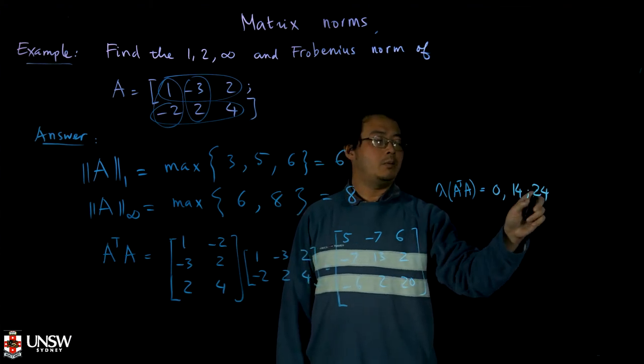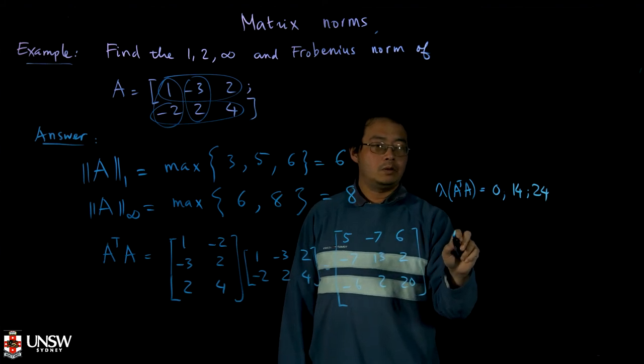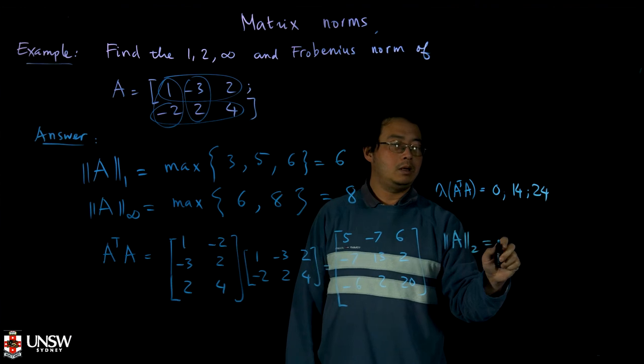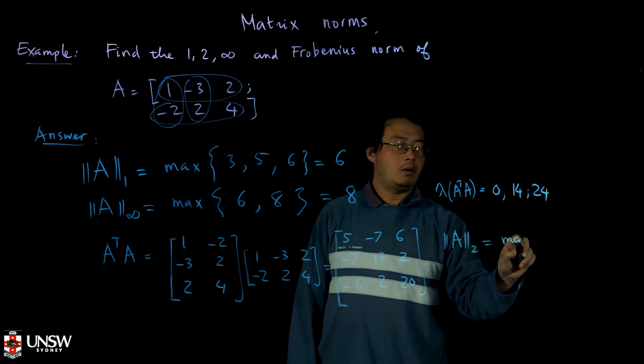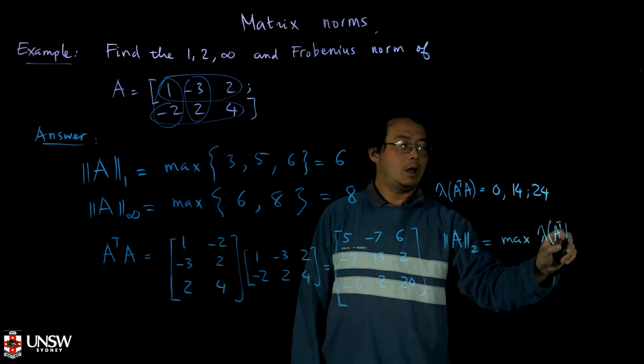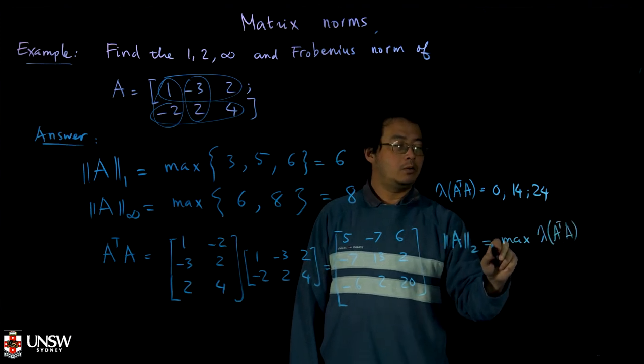So the maximum value will be 24. Therefore the 2 norm of the matrix A will be the square root of max of lambda A transpose A.